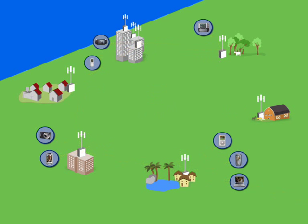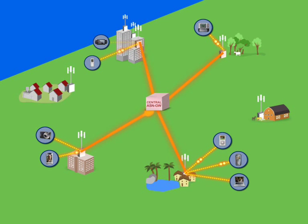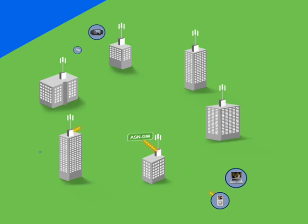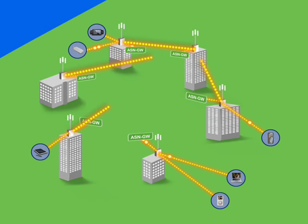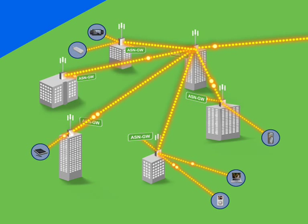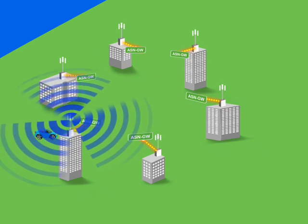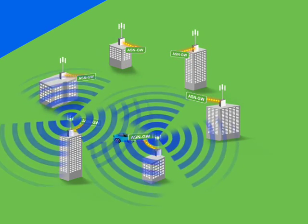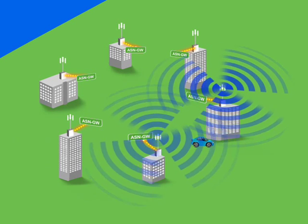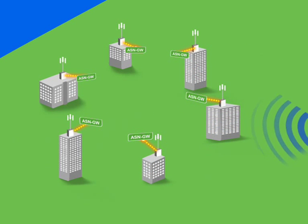In a centralized ASN gateway architecture, information is transported from every single base station back to the core level ASN gateway, creating significant delays. With Alvarian's distributed architecture, most of the communication is handled on the aggregation level between the base stations, allowing for almost instantaneous data transport. Localized mobility with Alvarian's distributed architecture means that handover success is fully controlled and data integrity is guaranteed.